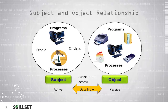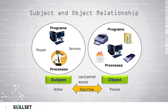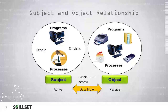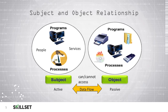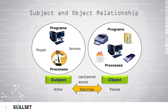This slide demonstrates the relationship between subjects and objects. On the left, we have our subjects, which are active participants such as processes, people, services, or programs. These subjects will then request access to objects on the right, such as programs, processes, or other pieces of hardware or files. This data flow concept is where we determine if the subject is or is not allowed to access these objects based on the access controls put in place by the system administrator.